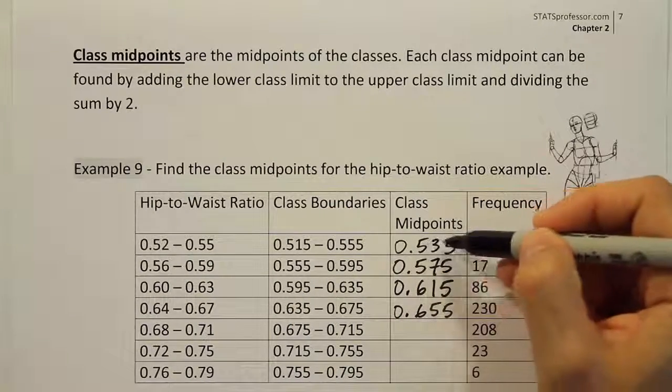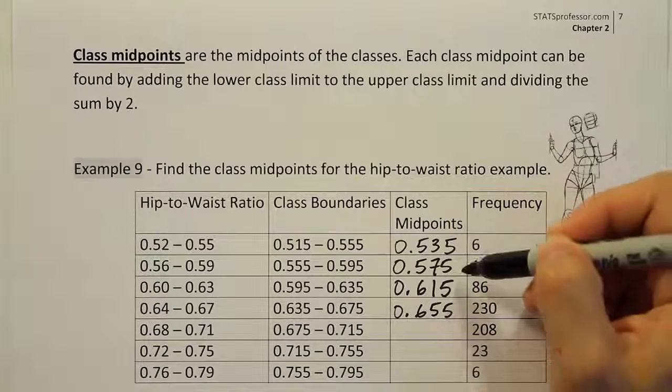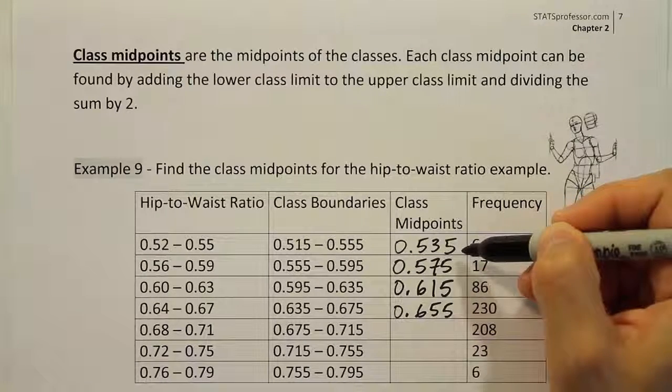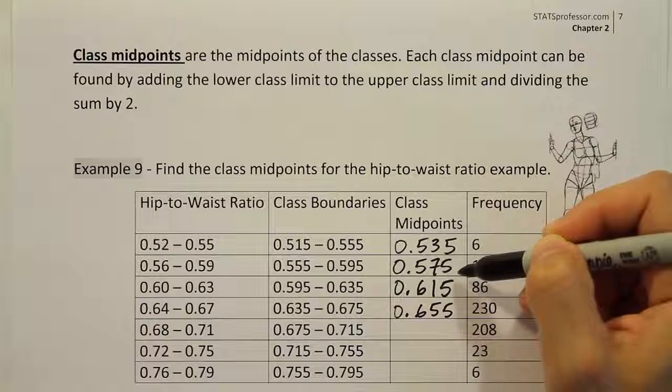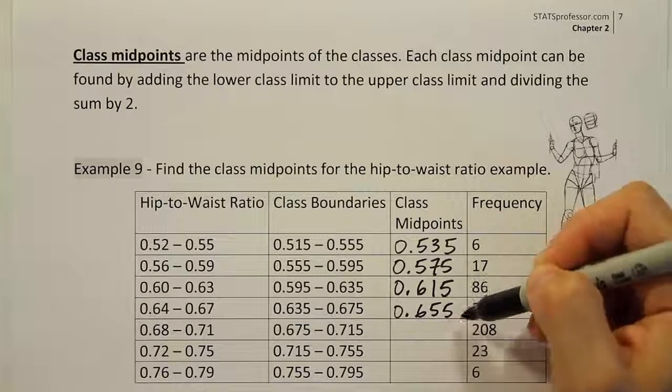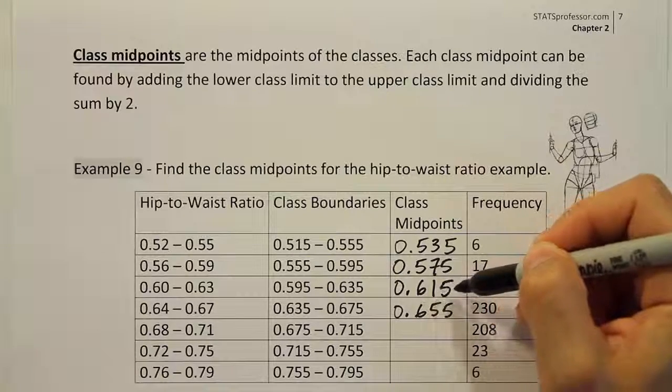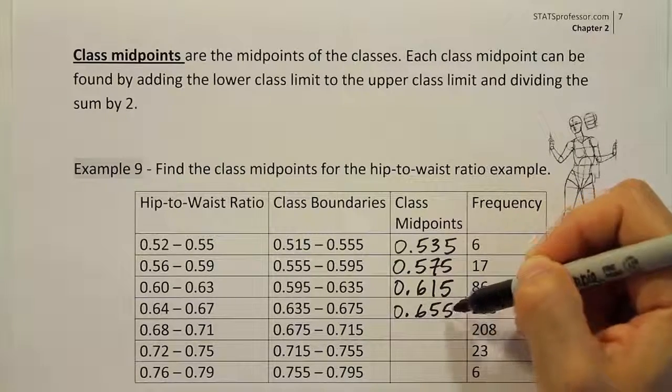You'll notice if you add .04 to this first class midpoint, you get the next class midpoint, right? .04 added to .535 gives you .575. And the same thing for the next one and the same thing for the next one. If I add .04 to .615, I'll get .655.